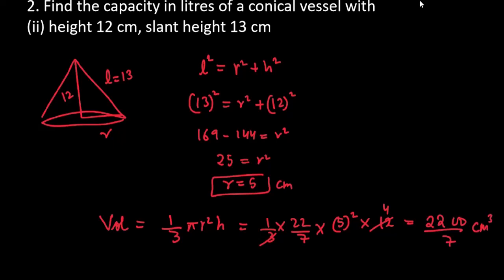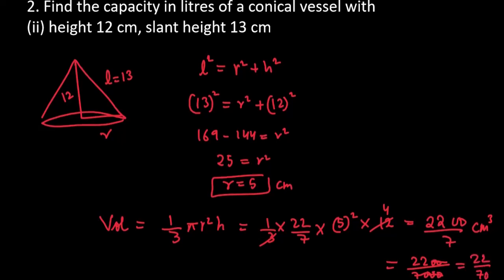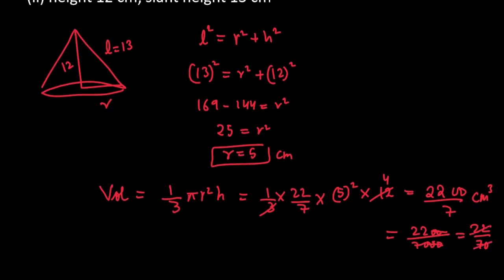2200 divided by 7 cm³. Lekin liter mein likhna hai, to hamein kis se divide karna parega? 1000 se. To niche kya aa jayega? Aap ka 7,000. Removing two zeros. Aap ke paas final answer kya aa jayega? 22 by 70. Abhi bhi reduce ho sakta hai. Dhyan se dekhen to.